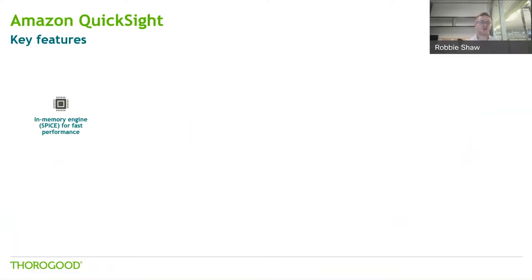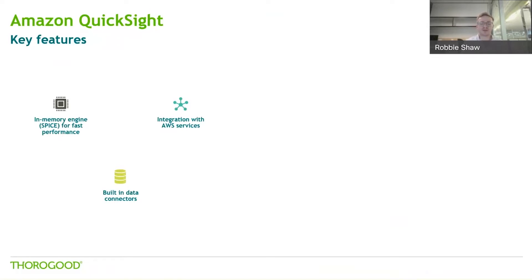What are some of the key features? It's got a really fast in-memory engine called SPICE, which I'll touch on more in a later slide. It's got built-in data connectors with AWS components, but also with pretty common data sources like SQL, Spark, Snowflake, and Salesforce. It integrates with AWS services - you can access it within the AWS console, and access to it can be controlled by identity access and management. AWS's single sign-on will allow you to sign on to QuickSight as well, and you can manage all the billing within AWS. It has fully cloud-based development, so you develop using the browser version - there's no application or tool you download and install, which can be really beneficial when starting up and not having to get downloads or installs approved by IT.